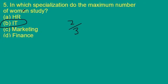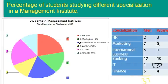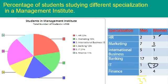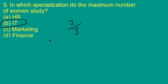Next question: in which specialization do the maximum number of women study? We check the women's ratio in each department: 3/5, 5/12, 1/6, 10/27, 2/3, 2/3. The ratio 2 out of 3 parts is the maximum number, so the IT department is the answer.